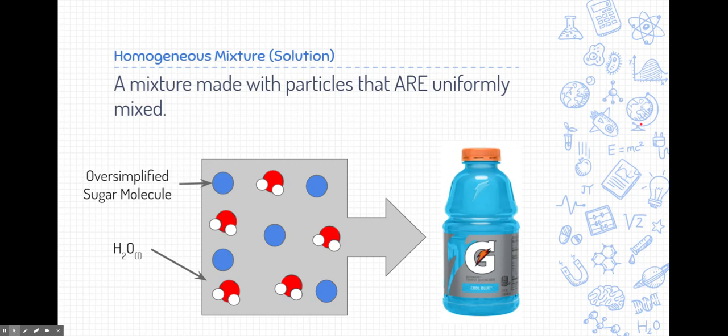So what's a homogeneous mixture? Well, homo means the same. And so this is a mixture where the particles are uniformly mixed, or they are the same throughout. We often call homogeneous mixtures solutions, and you might want to remember that, because we're going to delve further into solutions in a later set of notes.